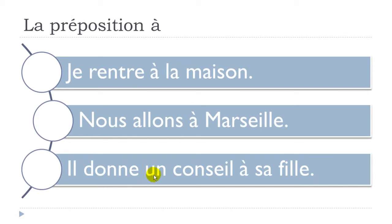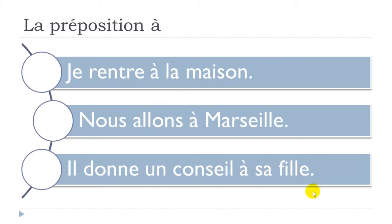'Il donne un conseil à sa fille' — donner means to give, un conseil means an advice, sa fille means his daughter. So 'he gives advice to his daughter' — use the preposition À. Summary: je rentre à la maison, nous allons à Marseille, il donne un conseil à sa fille.